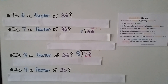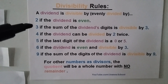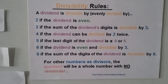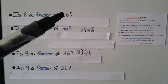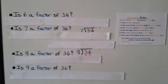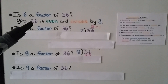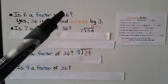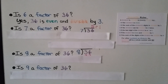Is 6 a factor of 36? The divisibility rule says the number must be even and divisible by 3. 36 is even, so that part fits. Is it divisible by 3? We add 3 plus 6 to get 9, and 9 divided by 3 is 3 — it divides evenly. Since 36 is even and divisible by 3, yes — 6 is a factor of 36.